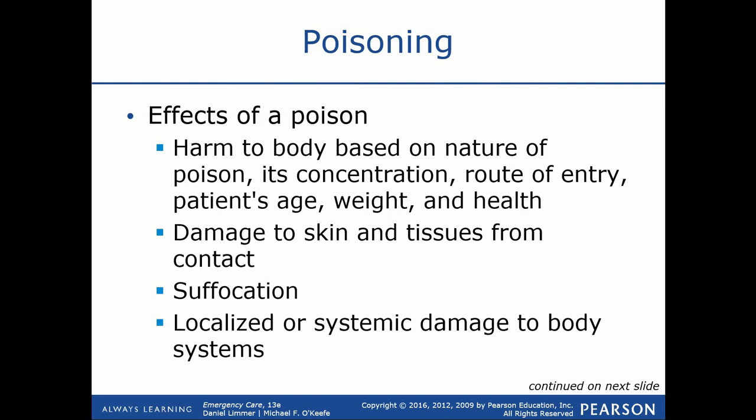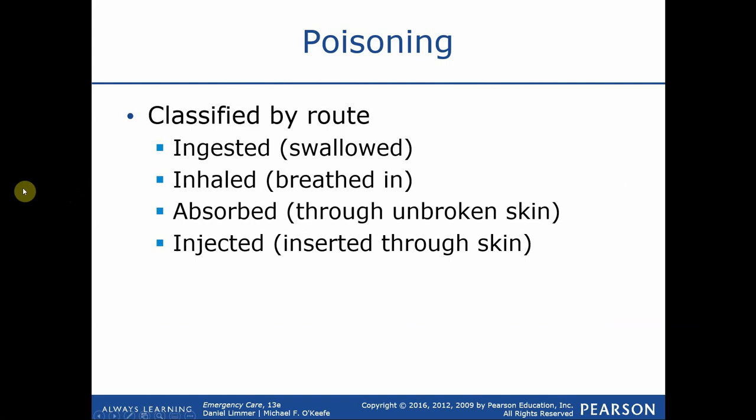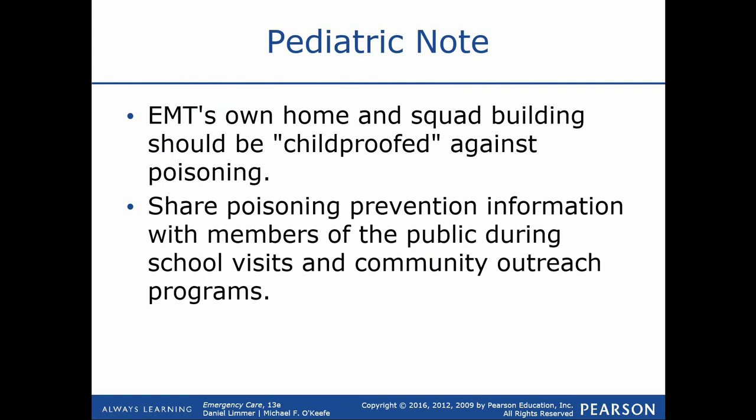There are several different routes by which a poisoning can occur: you can ingest poisons, they can be inhaled, absorbed through the skin, or injected. A key point about absorption is that it can occur through unbroken skin — not just through cuts, scabs, psoriasis, or eczema. With a lot of poisons, they can go through unbroken skin just as easily, so don't assume the skin will be an overall protective measure.